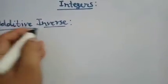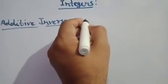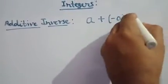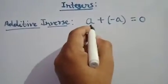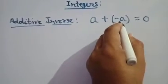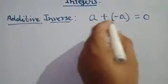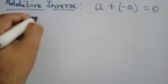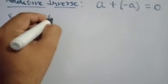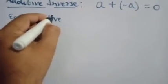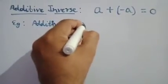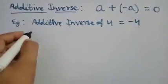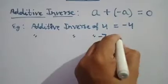Let me start with the additive inverse of integers. You can easily identify the additive inverse with this relation: when an integer is 'a', its additive inverse is minus a. 'a' and minus a are called additive inverses because their sum is zero. For example, the additive inverse of 4 is minus 4, and the additive inverse of minus 7 is 7.